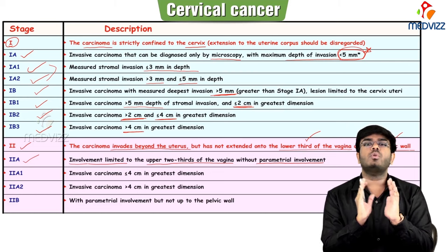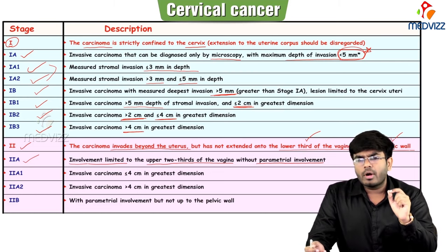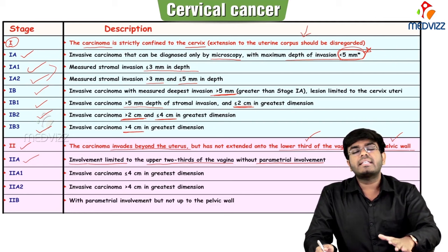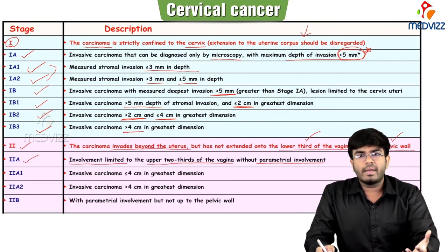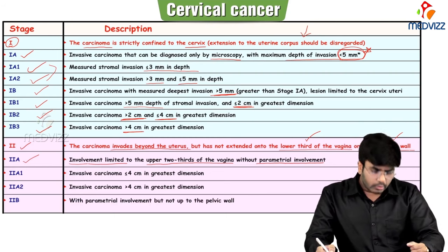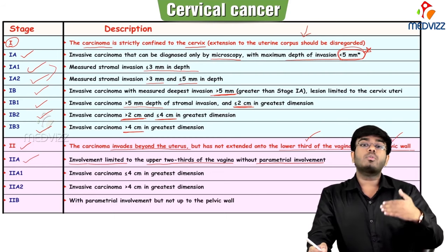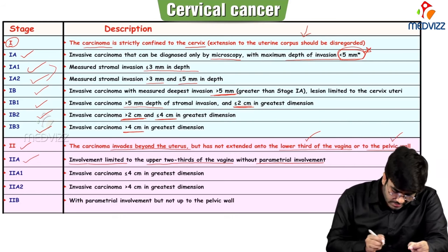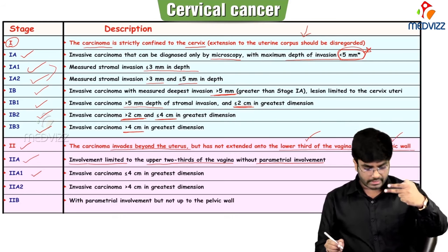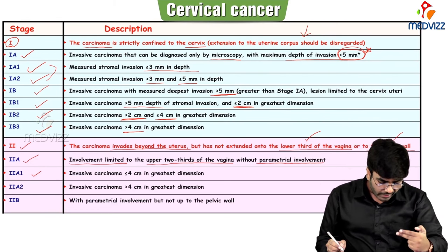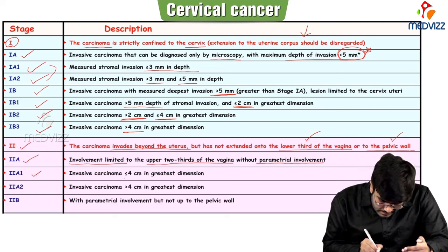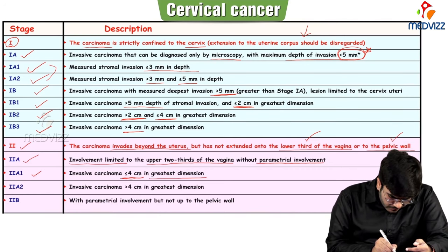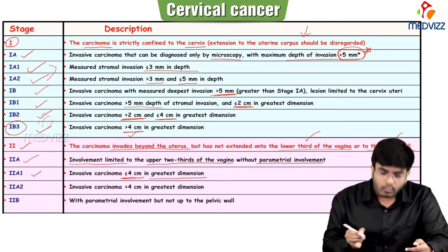In stage 2a, involvement is limited to the upper two-thirds of the vagina without parametrial involvement. Stage 2a is further divided into 2a1 and 2a2. In 2a1, cancer size is less than 4 centimeters. You may ask: in 1b3, cancer was greater than 4 cm, so how can 2a1 have less than 4 cm? The answer: staging depends on involvement, not just size.